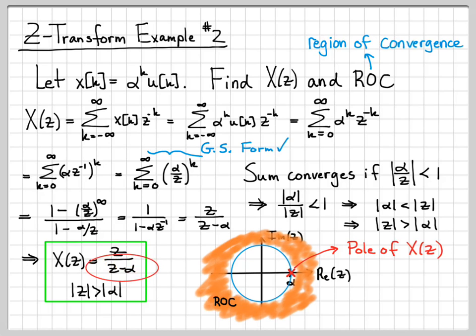That's what we call a pole of the transform. That's a spot where X of Z equals infinity.